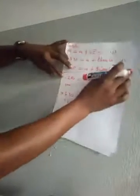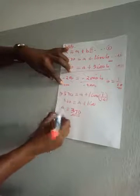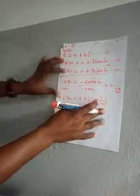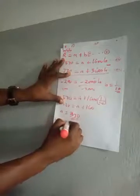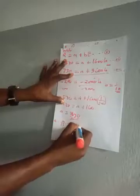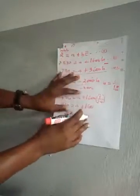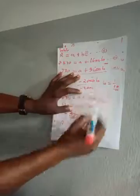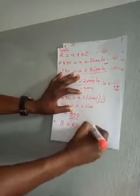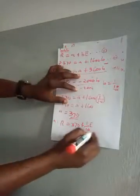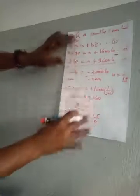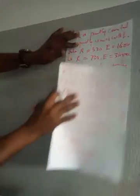Now that we have both constants, we can write the equation connecting r and e. R is equal to 370 plus one-tenth e. That is the answer to the first part of the question. The second part says find the value of r when e is 1300.